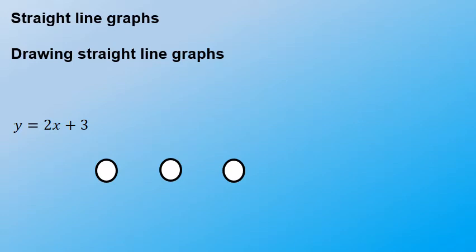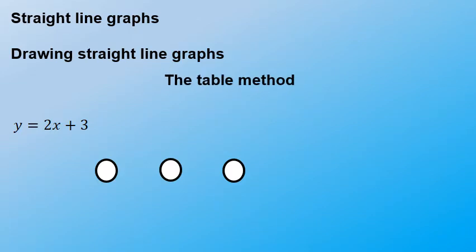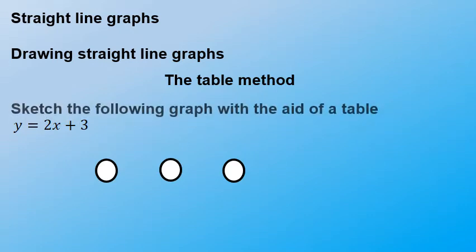Hello and welcome to straight line graphs. We're going to start by looking at how to draw straight line graphs, especially with three methods: the table method, the dual intercept method, and the gradient method. So the first thing we're going to look at is the table method.